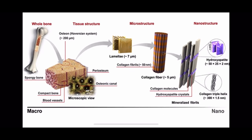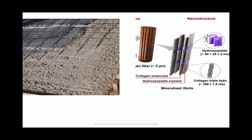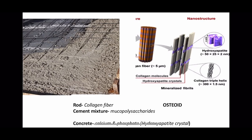Some basic background: if you closely look at the nanostructure, you see long fibers of collagen interspersed with blue crystals which are minerals — hydroxyapatite crystals, which means calcium and phosphate. This structure is very much akin to a road or a ceiling where there are iron rods interspersed with concrete and cement mixture. The rods are actually the collagen fibers, cement mixture is the binding polysaccharides, together they form the osteoid, and the concrete represents the minerals.